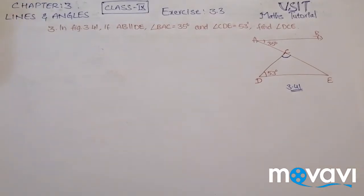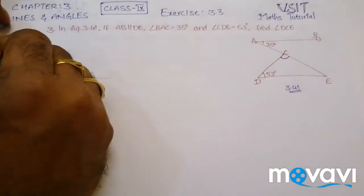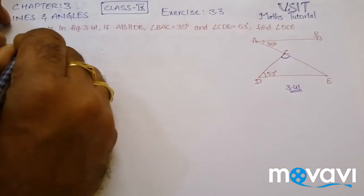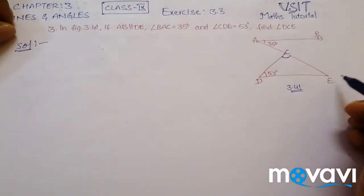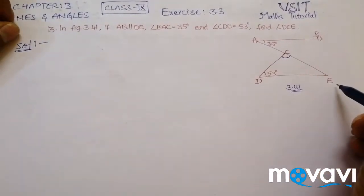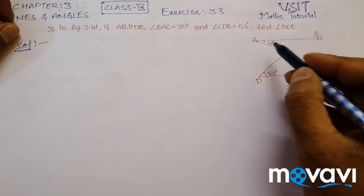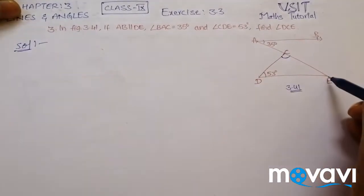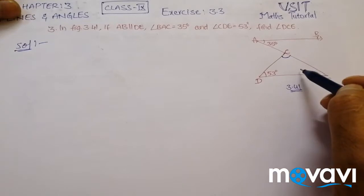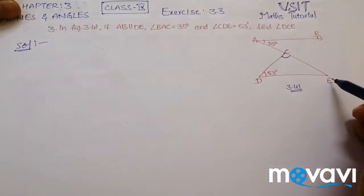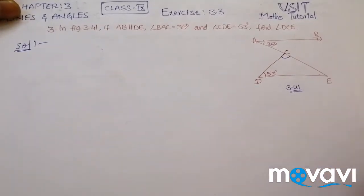Now see, they have given that AB is parallel to DE. AB is parallel to DE and AE is acting as transversal. So that this angle BAE is interior alternate angle to AED which is equal to this.